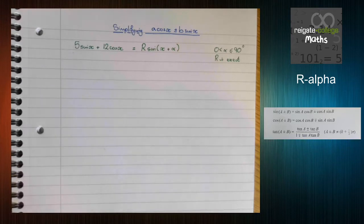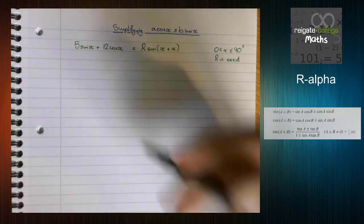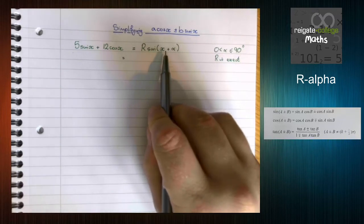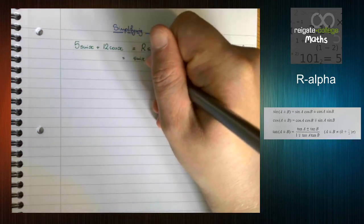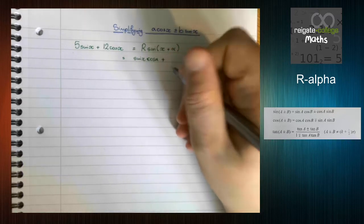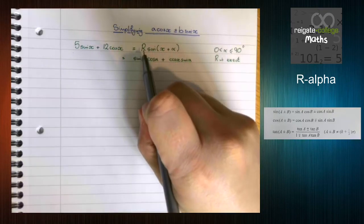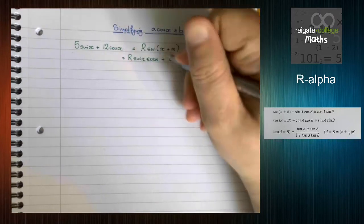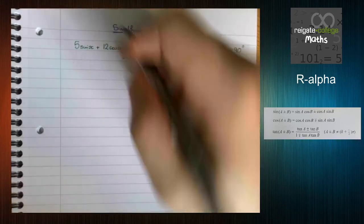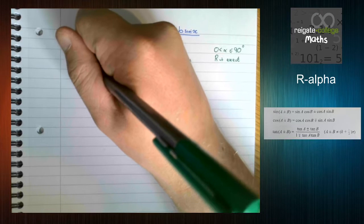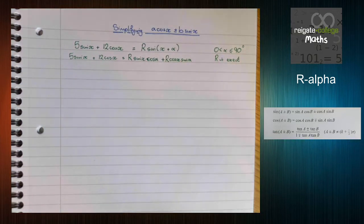So how do we do it? We're going to use our addition formula to expand this right-hand side. Now, we can see that we've got x plus alpha and a sine, so we're using that first one there. So we've got sine x cos alpha plus cos x sin alpha. We've got an r on the front, so we end up with an r on the front of both of those. We're saying that these two expressions are exactly the same thing, which means we can compare coefficients to work out what r and alpha are.